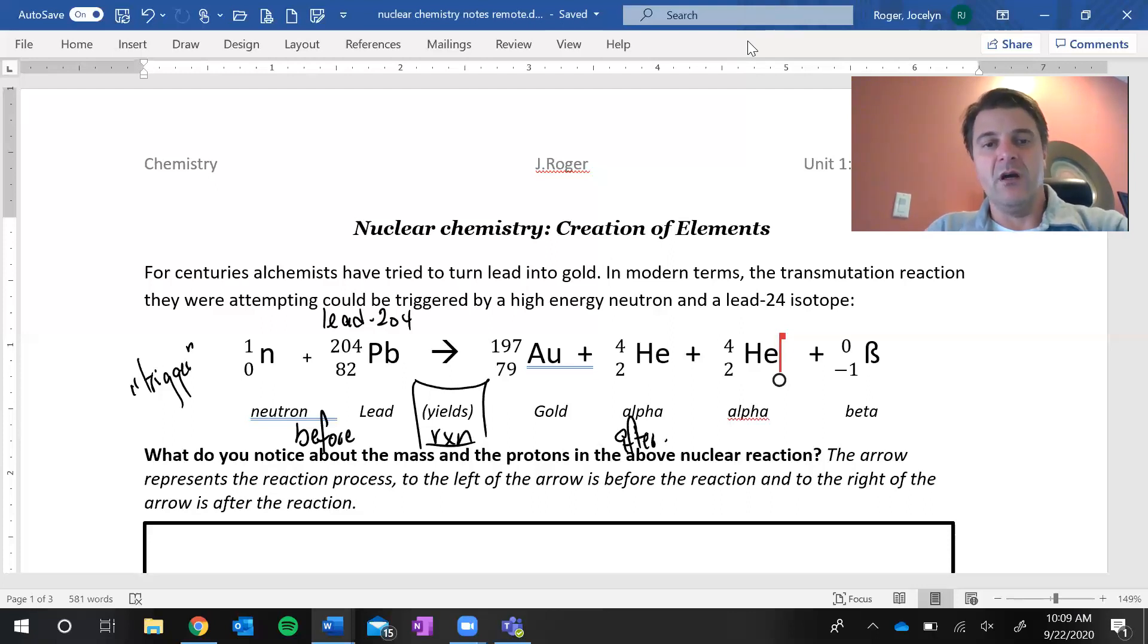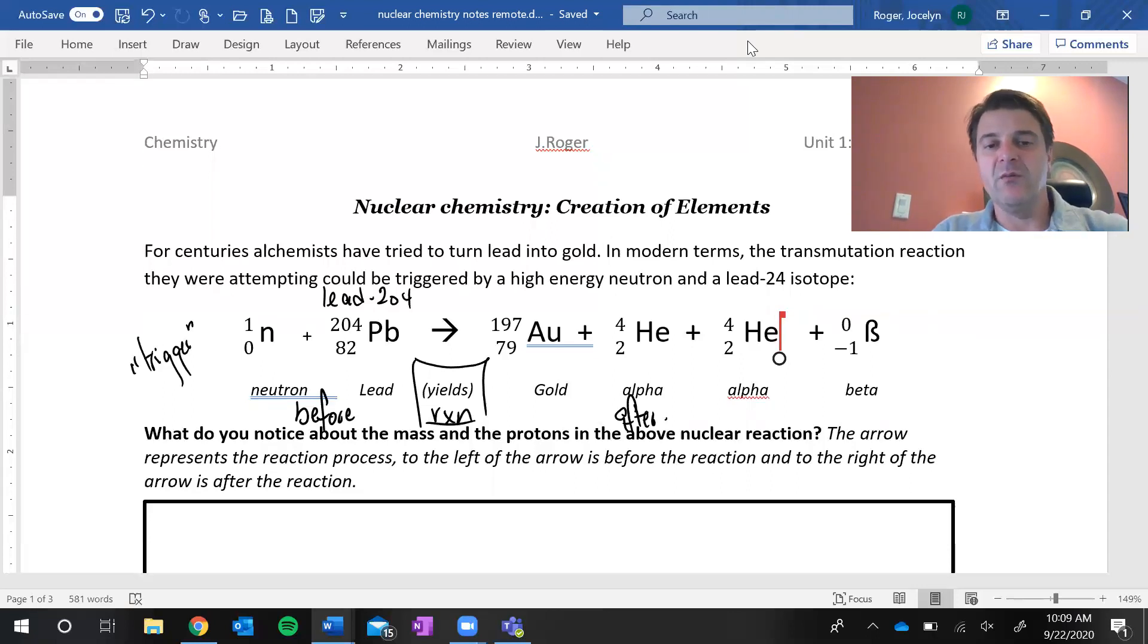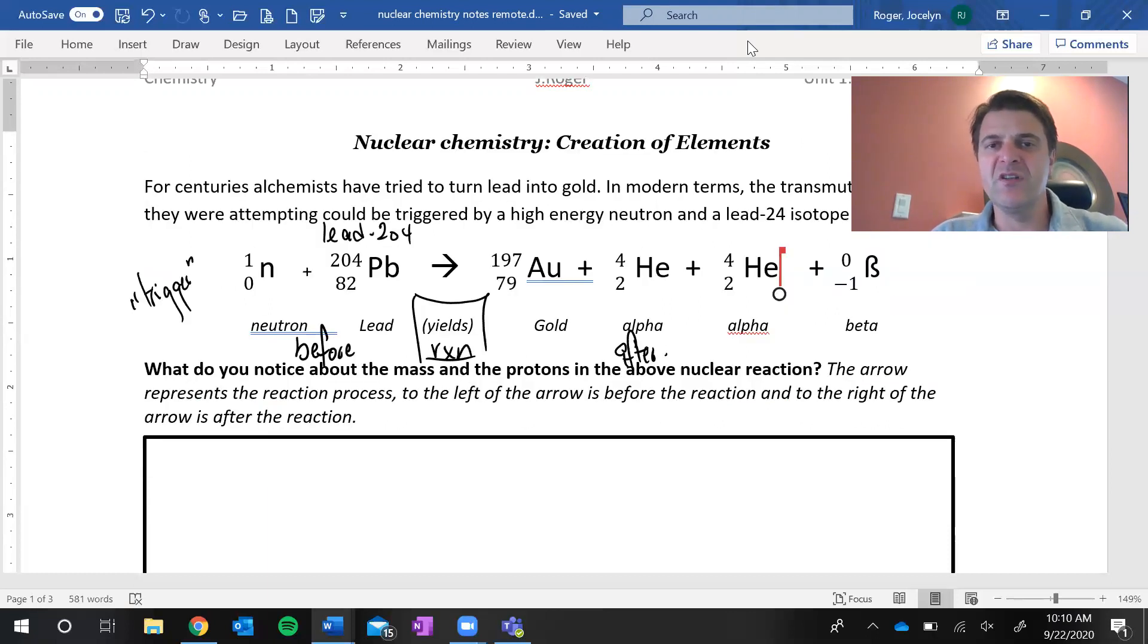Look at this reaction carefully. I would like you to tell me what you notice about the mass and the protons. You know how we've been writing atomic symbols with the number of protons and the mass of the substance. Look at what you can see here from before the reaction and then after the reaction and write down your thoughts in the box right here. The arrow represents the process. To the left is before, to the right is after. Look at the protons and the mass and write down what you see. Pause the video.